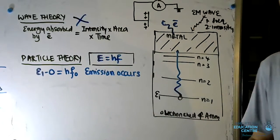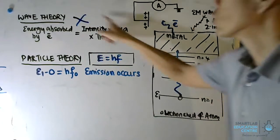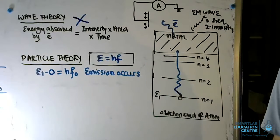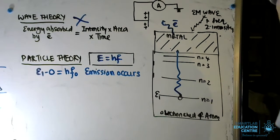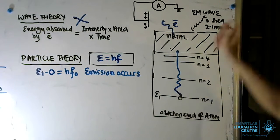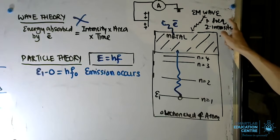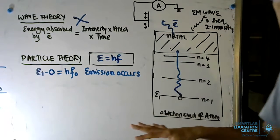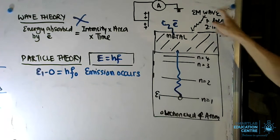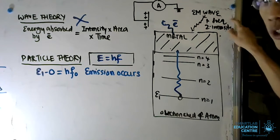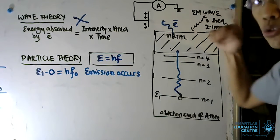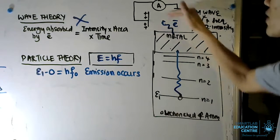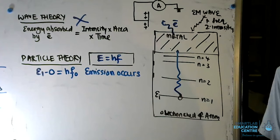That is why we know that the wave theory is inadequate to explain this. Under wave theory, frequency should not be a factor affecting photoelectric emission. However, what is interesting is that when the frequency is altered, observable photoelectric emission is detected.